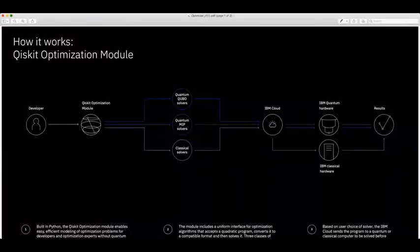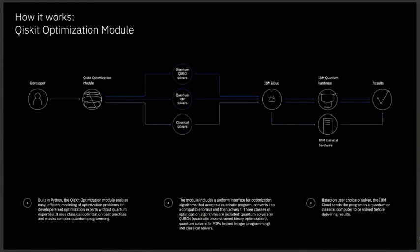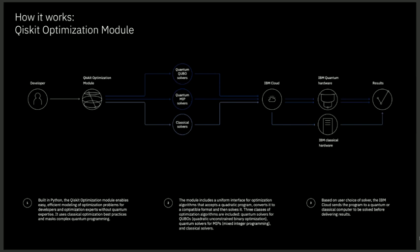In our last Qiskit release, we introduced a new optimization module. The idea was to reach out to a new audience of developers who can program by describing the problem they want to solve. In this case, an optimization problem — they can write down a quadratic formula and some description of the constraints of their optimization problem. They can choose different solvers — both quantum and classical — because many developers are trying to answer exactly: what is the value today, how does the quantum work versus the classical? Based on that choice of solver type, they send the workload to the IBM cloud and we distribute it to the appropriate quantum or classical hardware and deliver the result back.